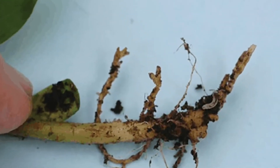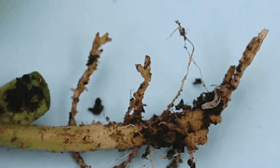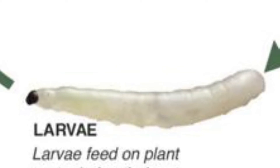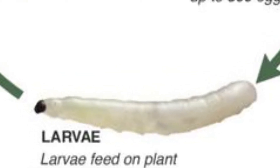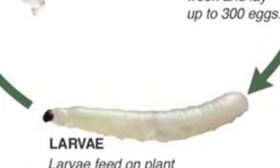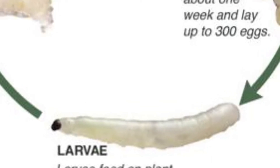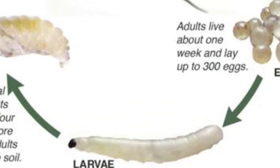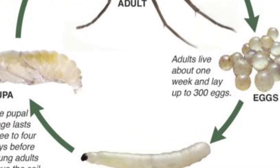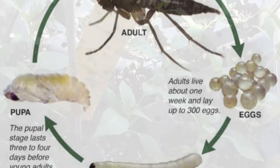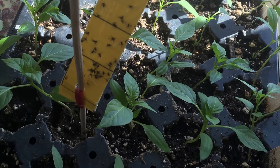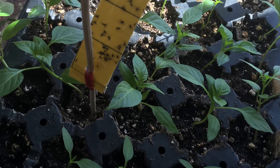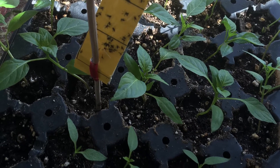It's actually the larva, or the baby flies, that cause the most damage to the pepper plants. They're in the soil and they eat the roots and cause the plant to die. Fungus gnats are insects and so they have a life cycle similar to other insects. The fly lays its eggs on the top of the soil, then the larva hatches and eats the roots of the plants.